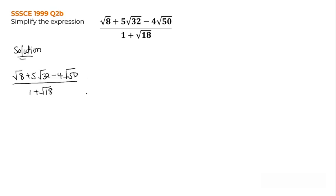So why don't we ease things for ourselves? We ease things by breaking down the top expression we have to get a simpler form that we can actually simplify.